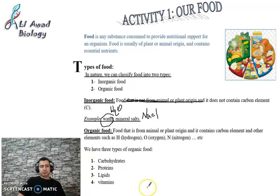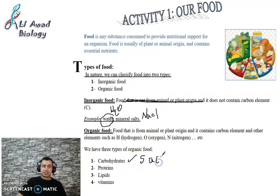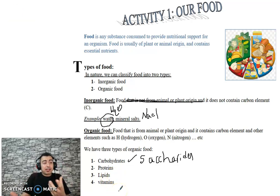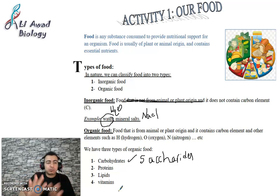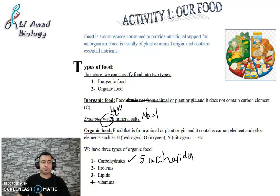What are the types of organic food? Organic food includes these types: carbohydrates, proteins, lipids, and vitamins. We have mainly three key types of organic food: carbohydrates, proteins, and lipids.